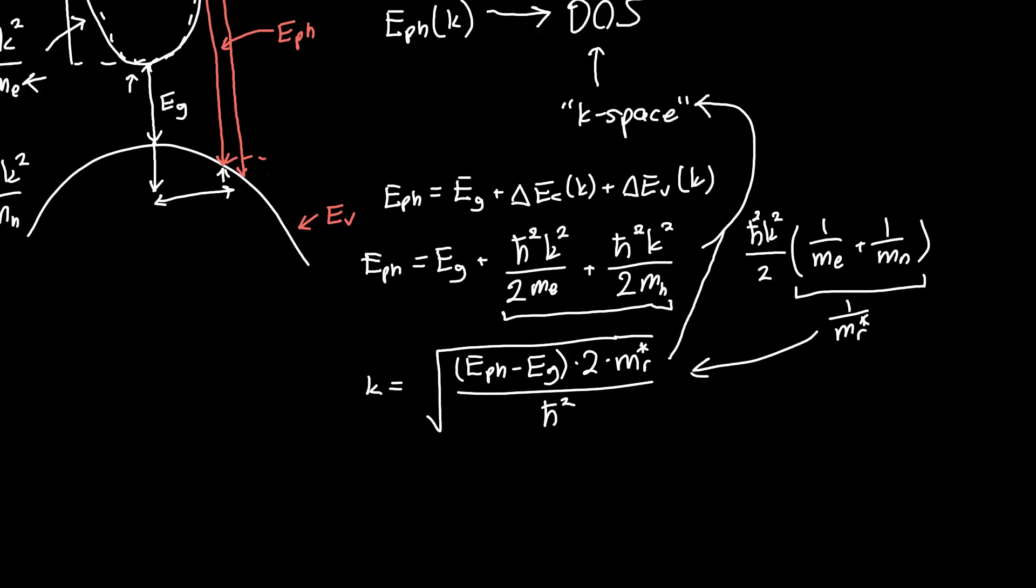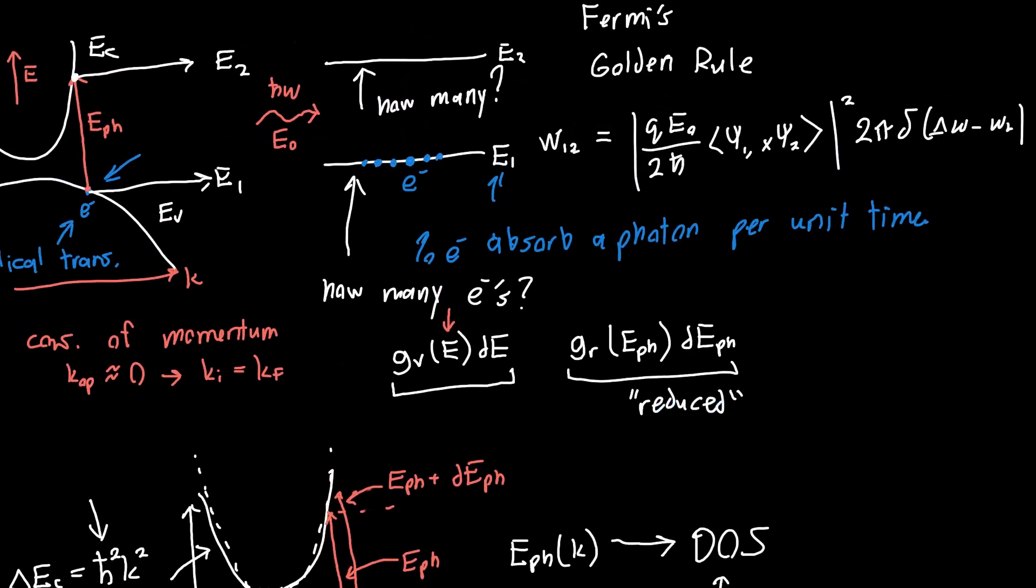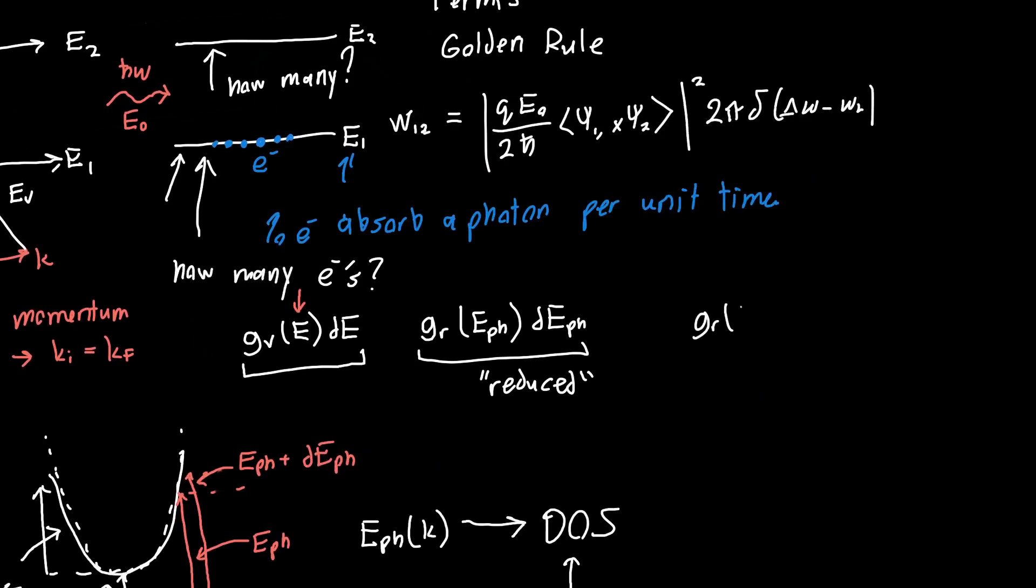And so if you use this k to derive the density of states, then you'll get what we call a reduced density of states as a function of the photon energy, which can be written in terms of h or h-bar. So 2mr to the 3 halves divided by h-cubed times the square root of E photon minus our band gap energy. And so this is our new density of states. This corresponds to the number of electrons we have available in this state E1. The number of states per unit volume would just be the density of states times our differential element dE photon. This is the number of states available in E1 per unit volume.